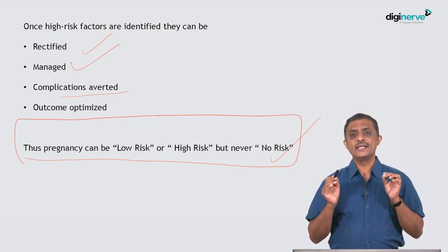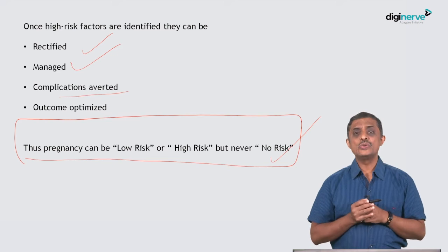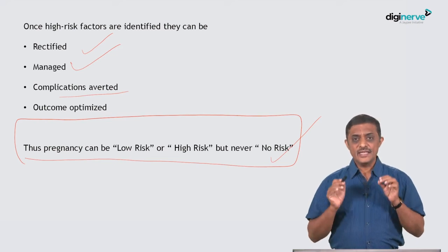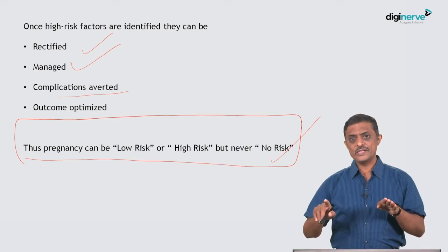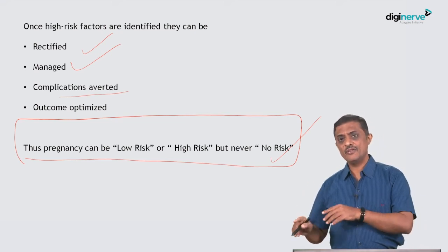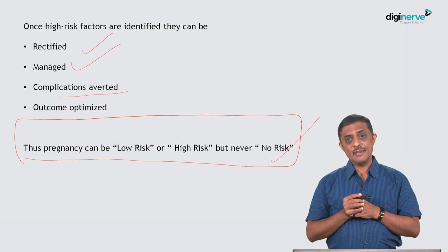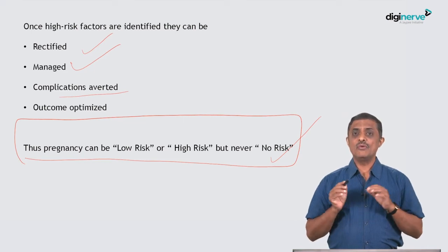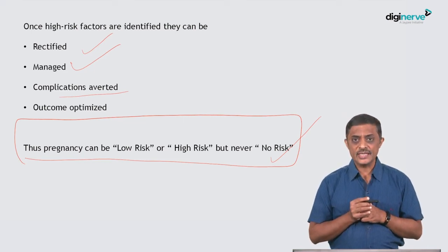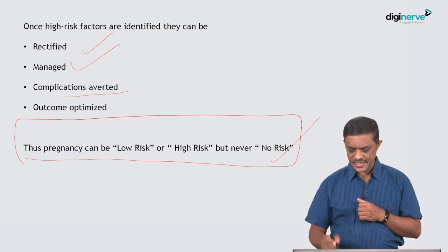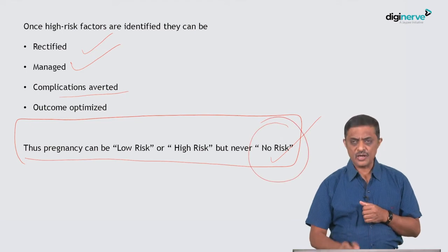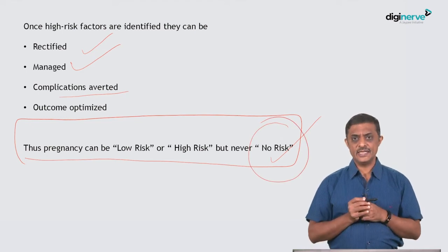That saying is a hundred percent true — uneventfully progressing in pregnancy and uneventfully delivering may be a very fortunate event in the life of a woman, because anything can happen. Hence, there is no concept of no-risk pregnancy; it is always either a low-risk pregnancy or a high-risk pregnancy.